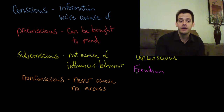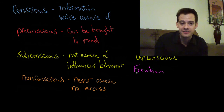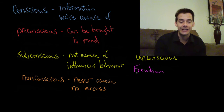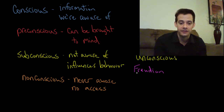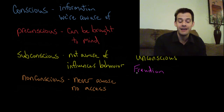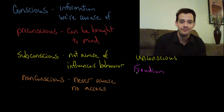So these are the different levels of access that we have to different types of information, which we can categorize as conscious, pre-conscious, subconscious, or non-conscious. I hope you found this helpful. If so, please like the video and subscribe to the channel for more. Thanks for watching.